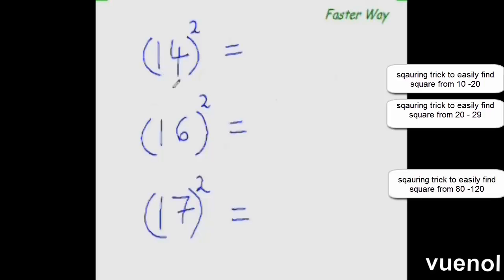So now you find out the square of all these numbers. So 14 square would be: add this 4 to 14. 14 plus 4 is 18 and 4 square is 16. So 18 plus 1 is 19. So 196.